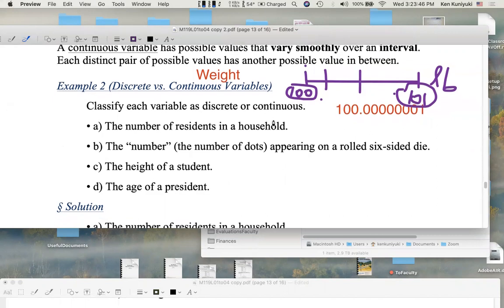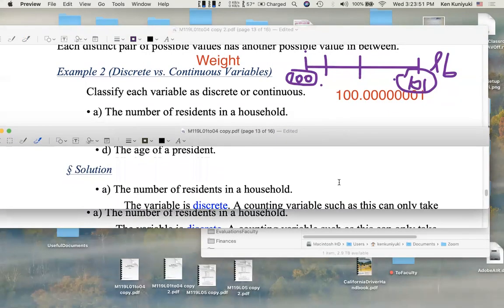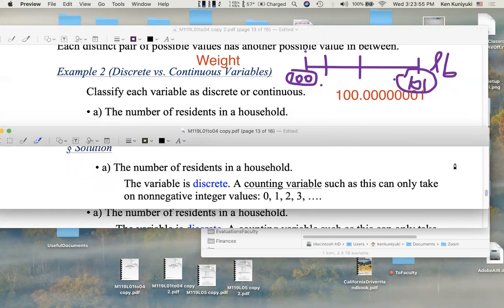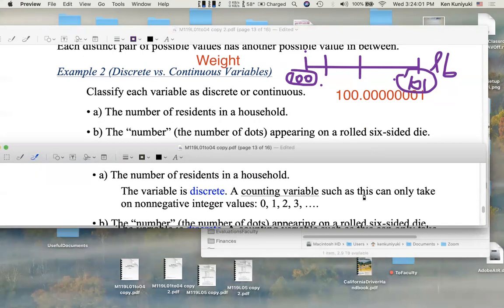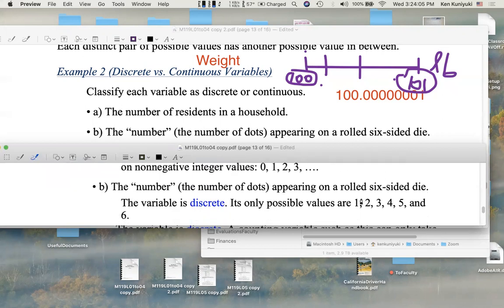Okay, so let's answer these questions. The number of residents in a household, that is discrete. It's a counting variable, because you could have no residents, one, two, three, and so forth. The number of dots appearing on a rolled six-sided die, well, the only possible values are one, two, three, four, five, and six. Discrete. It's a discrete variable.